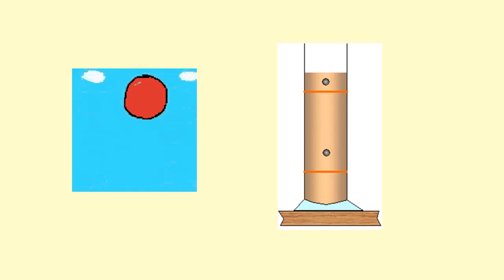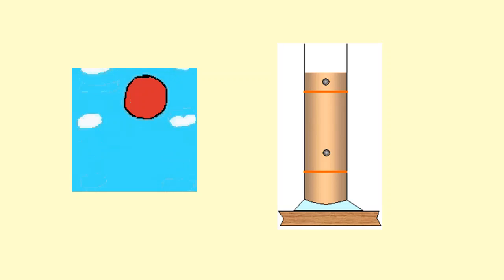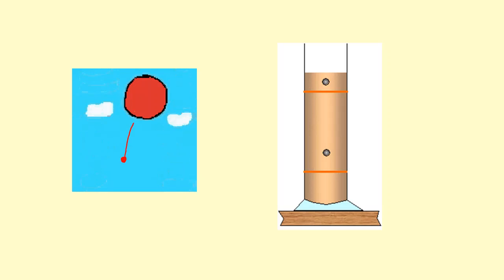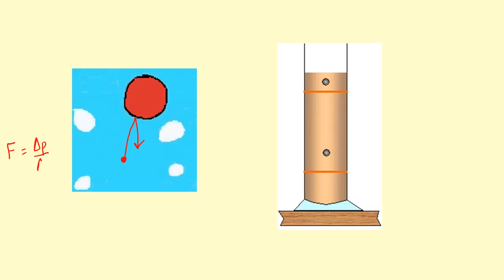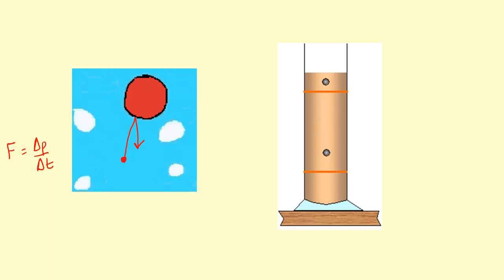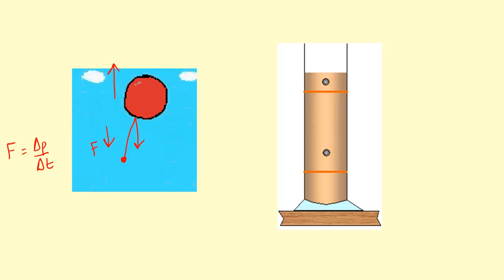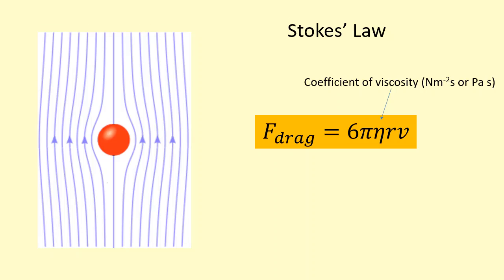Whenever an object moves through a fluid, or a fluid flows past an object, the object will experience a drag force. By fluids I mean liquids and gases. This happens because there are particles in the fluid that collide with the object, and when they rebound they experience a change in momentum. A change in momentum means a force — the object experiences a force in the opposite direction to the force the particles experience: equal and opposite.